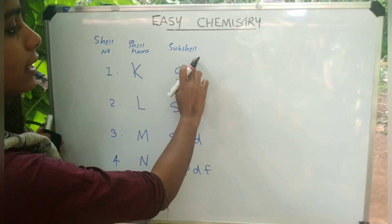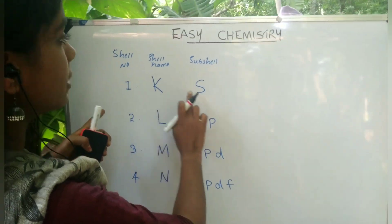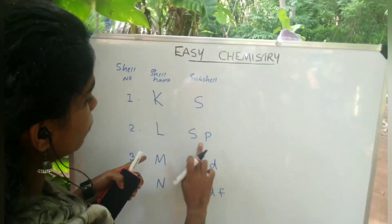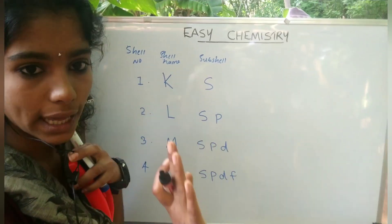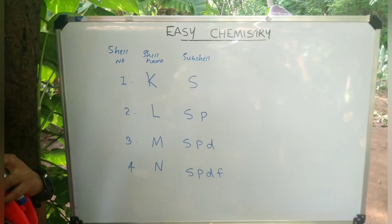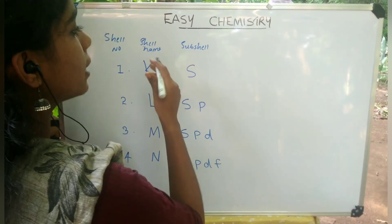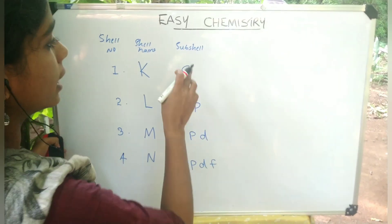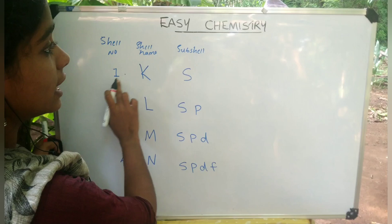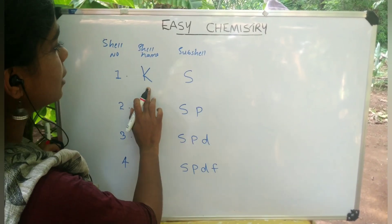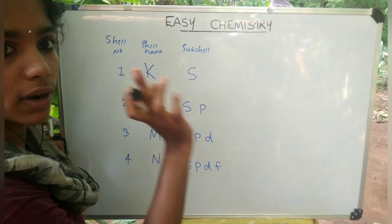Now, this sub-shell arrangement is as follows: K sub-shell is S only. L sub-shell is S and P. M sub-shell is S, P, D. We have already learned the maximum capacity. Now let's give you an idea of the sub-shell structure.